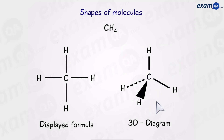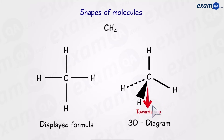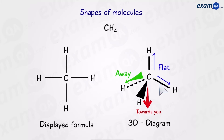We can represent that three-dimensional model with this diagram. There are some differences between the one on the right and the one on the left. Most notably, we have dashed lines and wedged lines. A wedged line represents a bond coming out of the plane of paper towards you. A dashed line represents a bond going away from you. These flat lines represent bonds that are neither going away from you nor coming towards you — they are in the plane of paper.